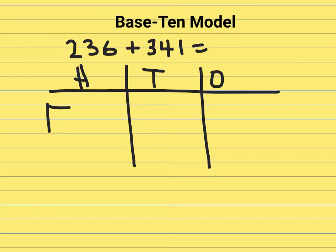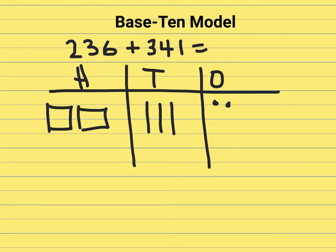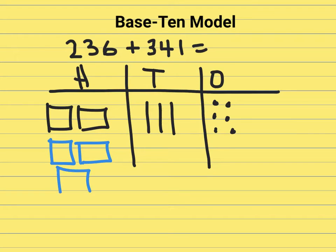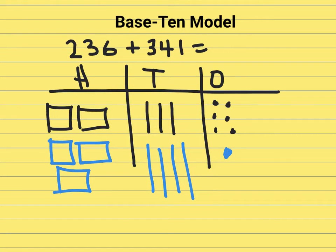I'll go ahead and draw out two hundred, thirty, and six. Then I'll go ahead and draw out three hundred, forty, one. Now what I'll need to do is go ahead and add all of these in each different column.